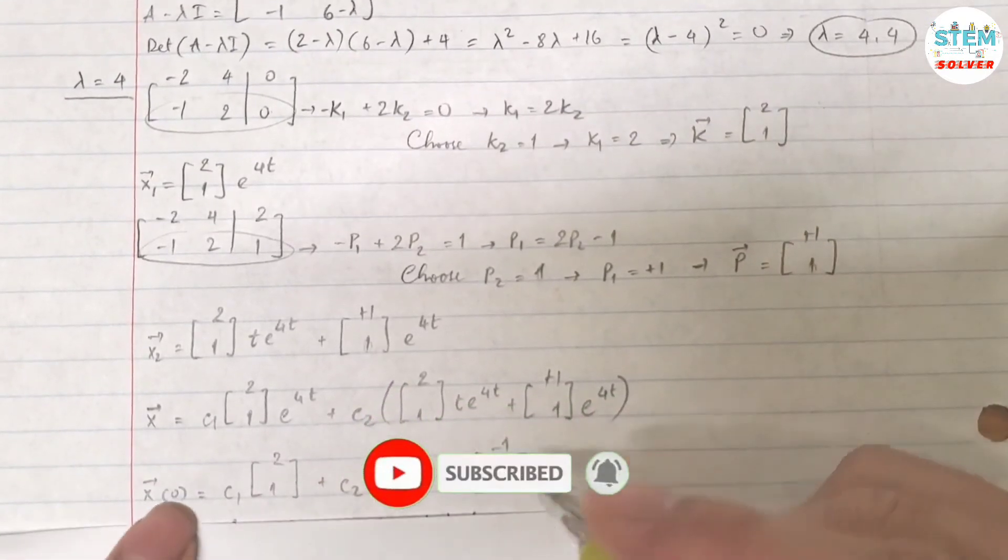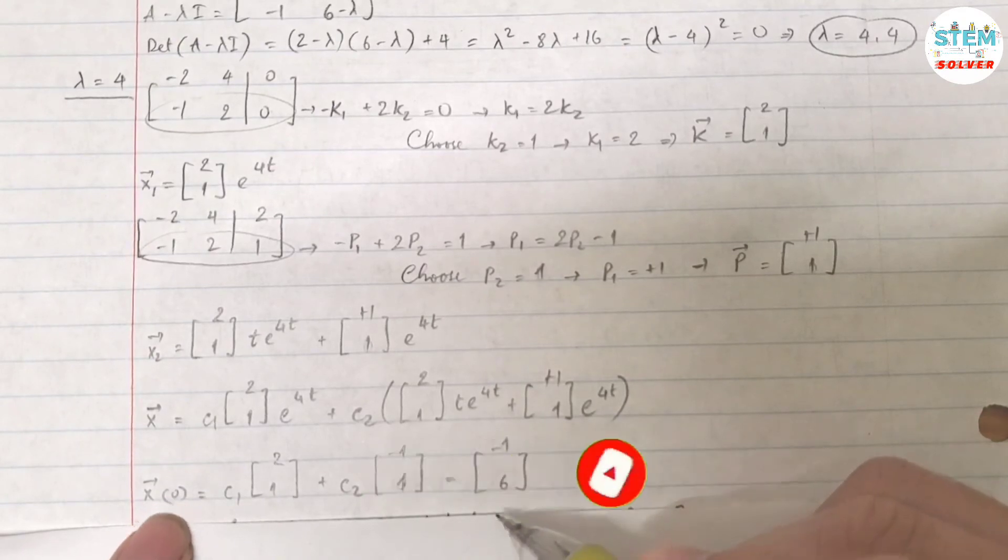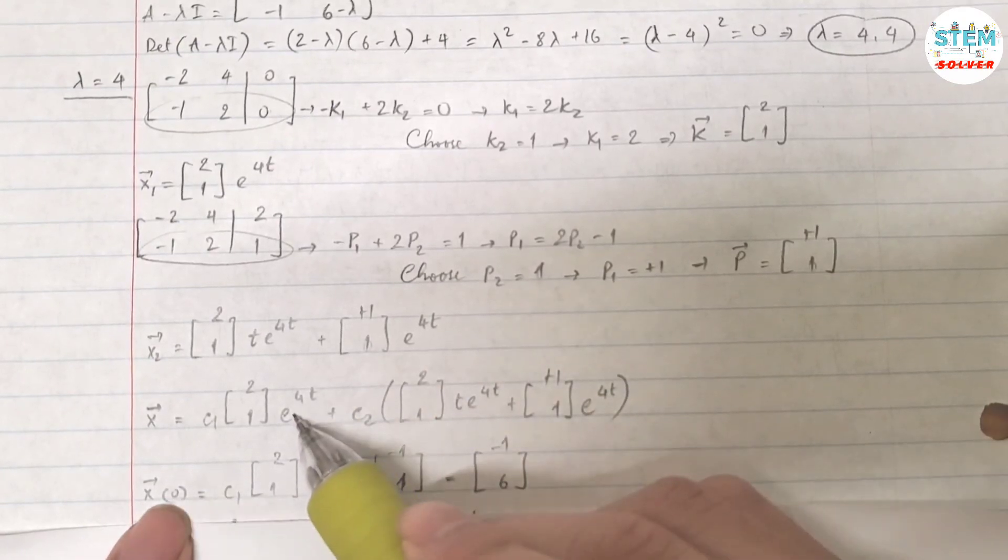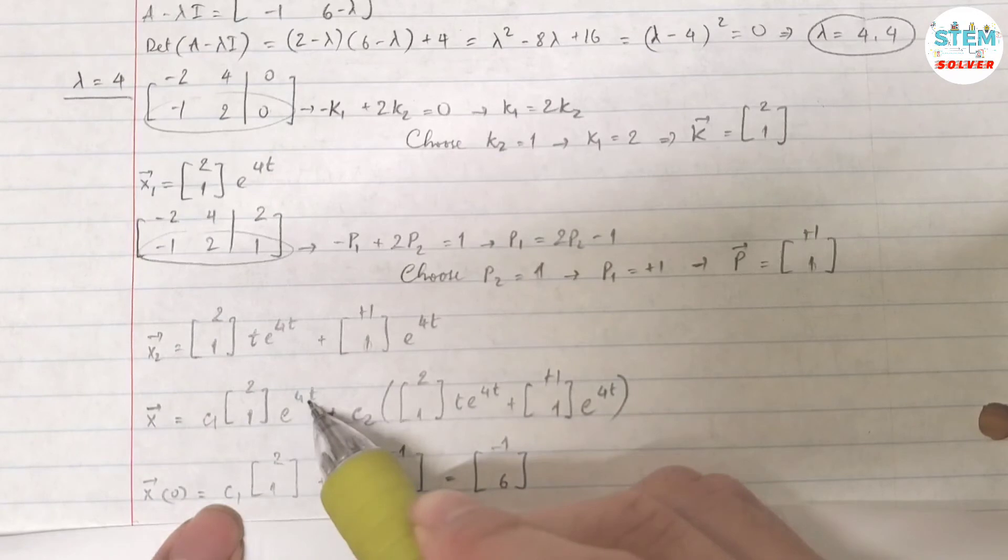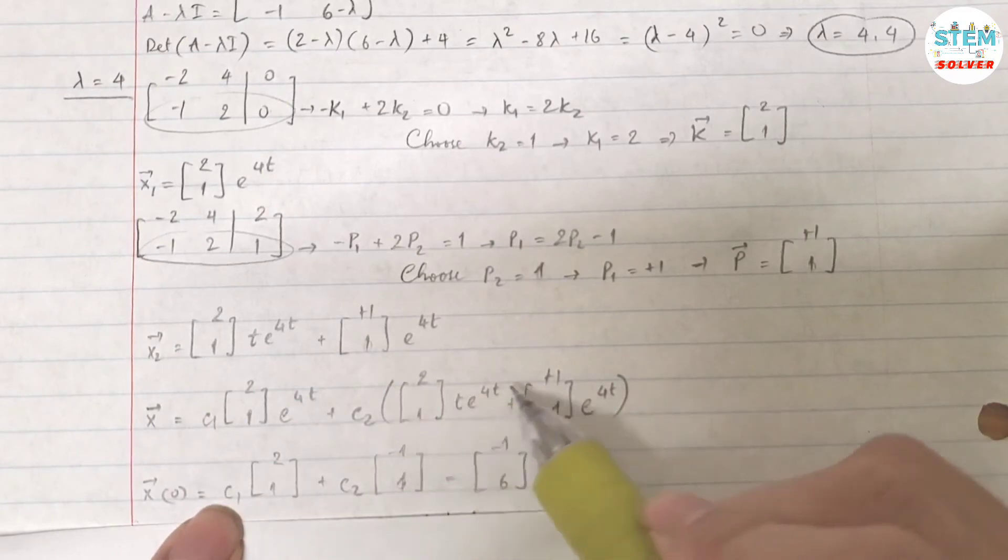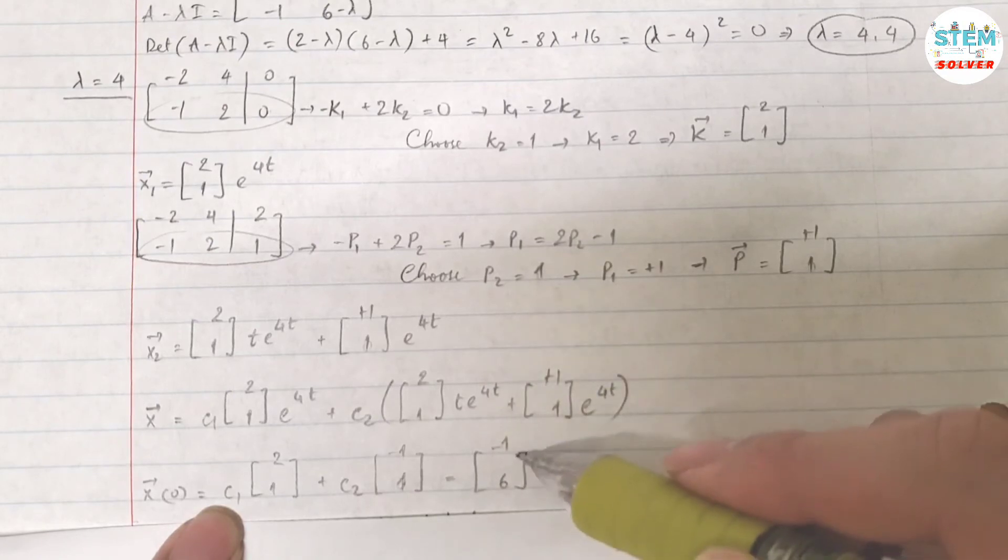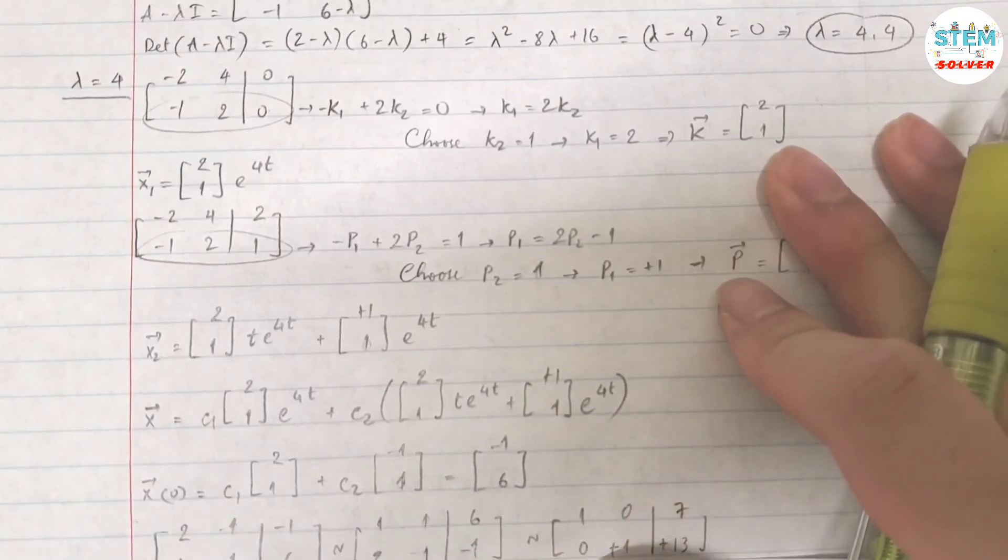So with the condition of vector x of 0 equals [-1, 6], plug in 0 into this one, you have c1[2, 1]e to the 0 which is 1. Plug in 0 for t into this one, this becomes 0, and you're left with c2[1, 1]. And that's equal to vector [-1, 6].